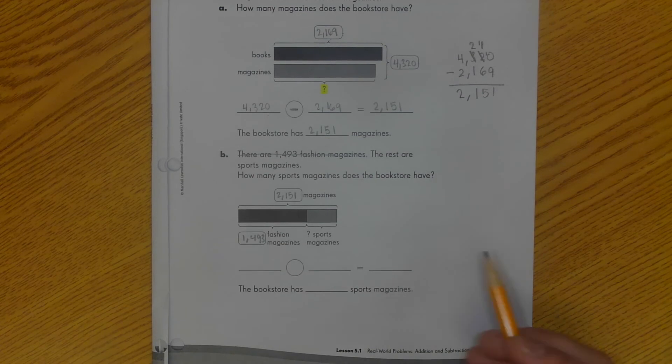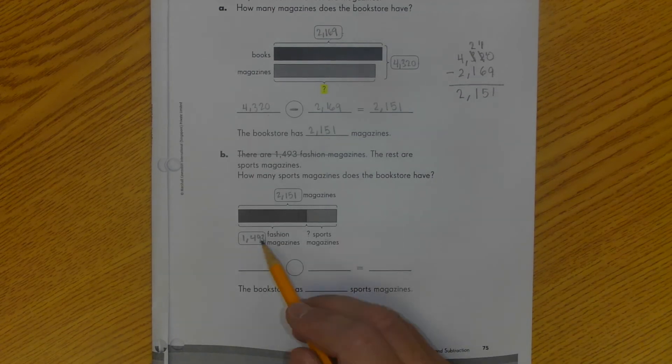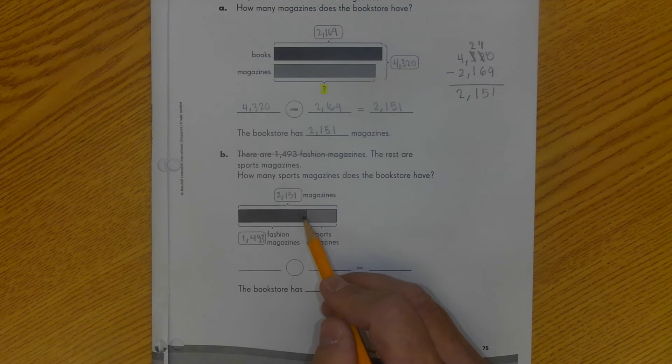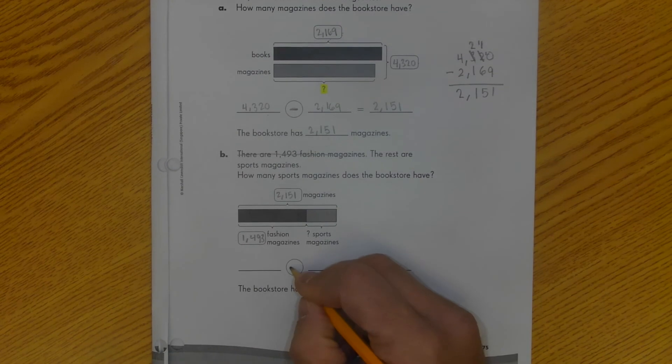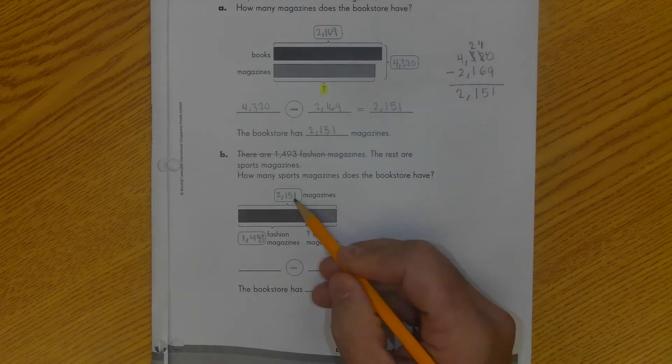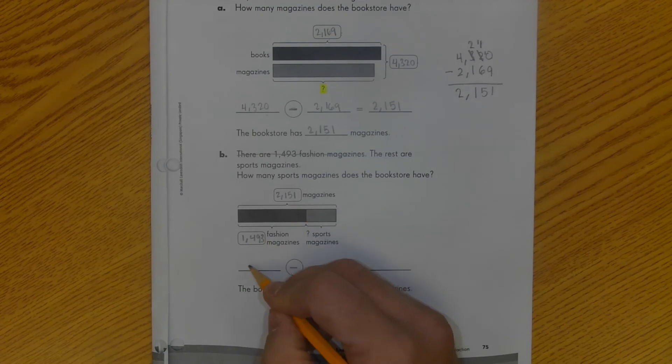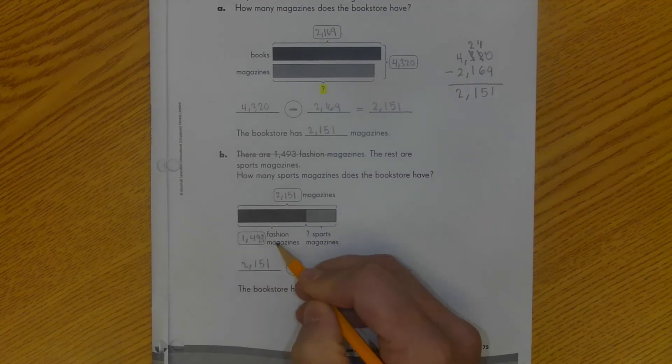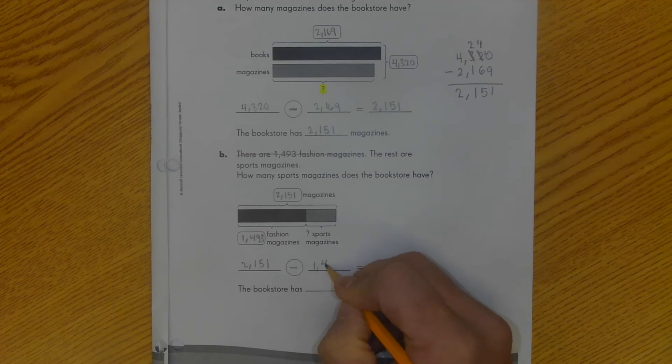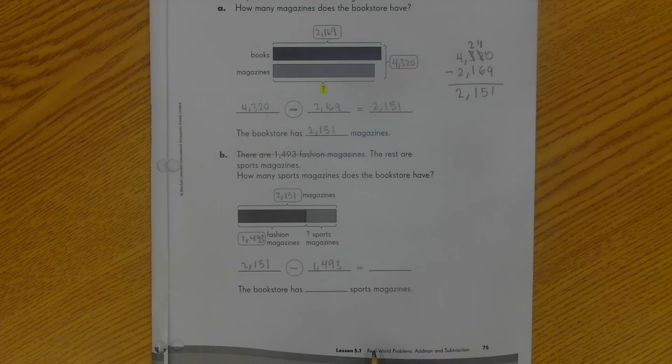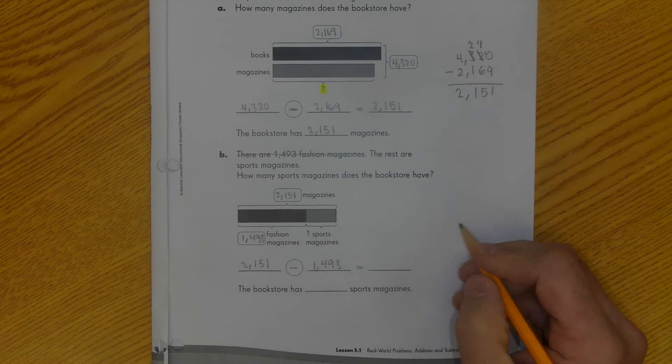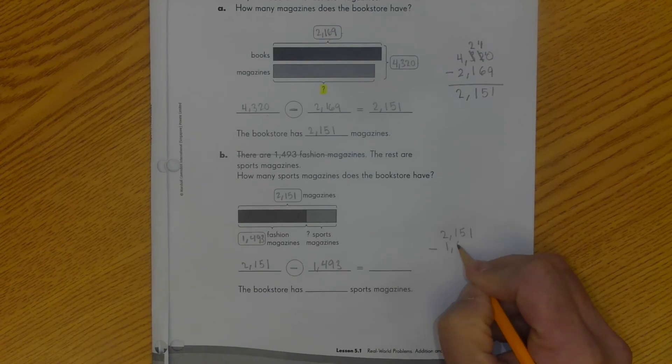So first things first, is it addition or subtraction? Well, the way this is set up, I'm not adding these two together because this is my total. So I'm taking this darker bar away from this total line. So I'm subtracting. So I'm going to put my subtraction symbol here. And again, I'm going to look at my numbers to find out which one's larger. 2,151 goes first. 1,493 goes second because I can't take a larger number away from a smaller number. It just doesn't work. And then I'm going to go ahead and restructure it. I'm going to set it up over here. 2,151 minus 1,493.